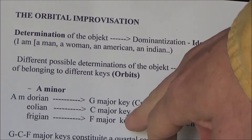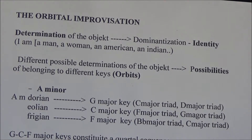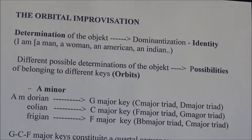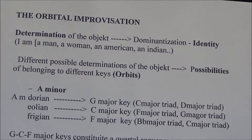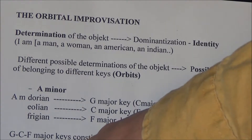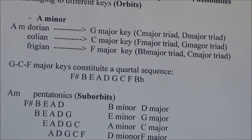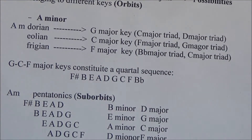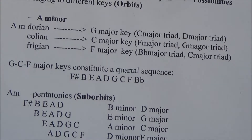These three keys constitute a quartal sequence. If I think about C major key, for example, I get B, E, A, D, G, C, F — that is a quartal sequence: the sounds of the major scale put in quartal order. If I do the same with G major and F major, I just need to add two notes to this central sequence: F sharp at the beginning and B flat at the end. So I get a broader ensemble to work on.